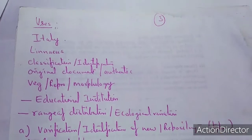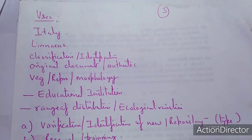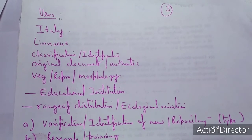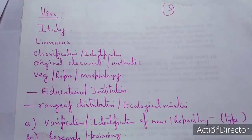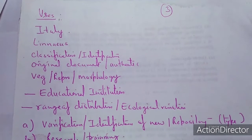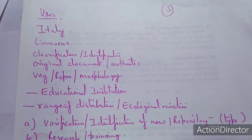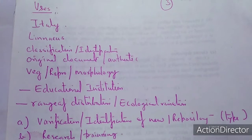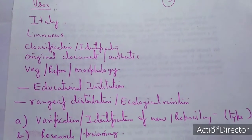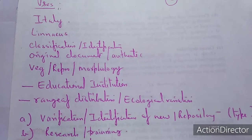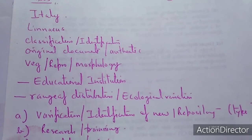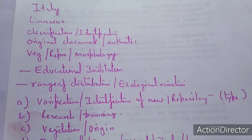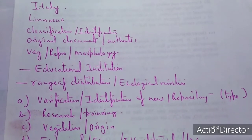There are certain uses of herbarium. Primarily, in 1545, the University of Padua is the place where herbarium practices were started, but this was consolidated by Linnaeus in 1753, who is known as the father of modern taxonomy. The herbarium is a basic unit for identification as well as classification. Original documentation and authenticity cannot be done without the herbarium. Vegetative, reproductive, and morphological structures cannot be discussed without it.